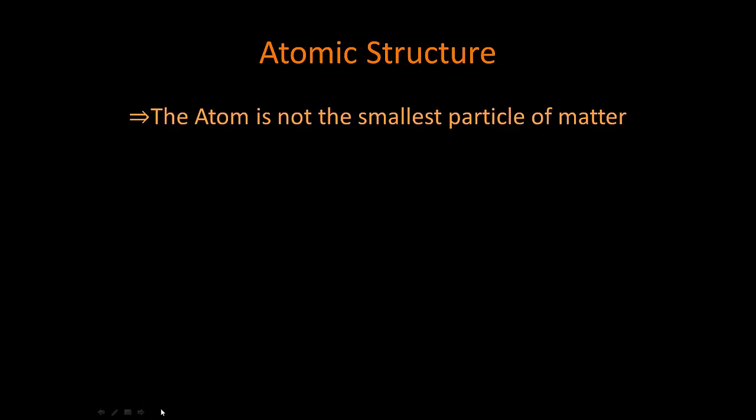So it turns out the atom is not the smallest particle of matter. It is the smallest part of an element. Different elements have different atoms, but it is not the smallest particle of matter. Atoms themselves are made up of different things.